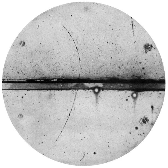A cloud chamber consists of a sealed environment containing a supersaturated vapor of water or alcohol. An energetic charged particle, for example an alpha or beta particle, interacts with the gaseous mixture by knocking electrons off gas molecules via electrostatic forces during collisions, resulting in a trail of ionized gas particles. The resulting ions act as condensation centers around which a mist-like trail of small droplets form if the gas mixture is at the point of condensation.